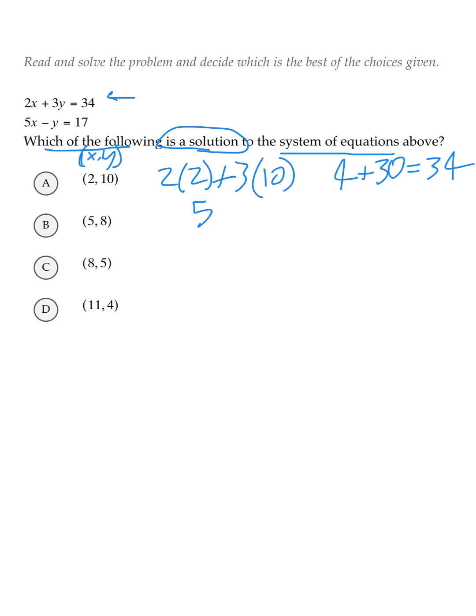5x, in this case, is going to be 5 times 2. Minus y, in this case, is going to be minus 10, and that's supposed to equal 17. 5 times 2 is 10 itself, and 10 minus 10 does not equal 17. So, answer A, gone.